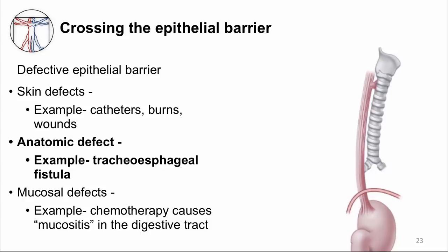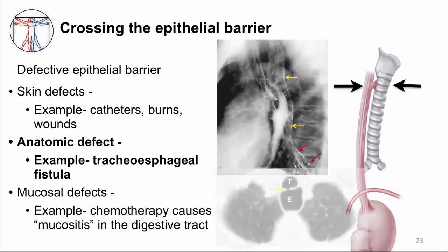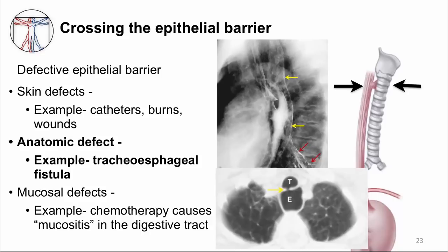Some people are born with a connection between the trachea and the esophagus called a tracheoesophageal fistula. This fistula can carry the contents of material from one tube to another. Someone with a tracheoesophageal fistula may end up with oral secretions in their lungs. Here's an x-ray of a man who had recurrent pneumonias. After drinking a radio-opaque solution called barium, it outlined the dilated esophagus shown in the yellow arrows, and the barium also went into the bronchioles shown by the red arrows. This meant there was a connection between the esophagus and the airways causing a defective epithelium and leading to a lung infection. The yellow arrow in the CT scan on the bottom shows the fistula between the trachea and the esophagus.